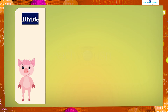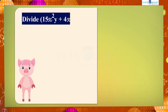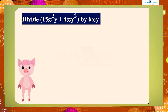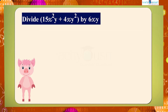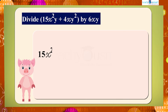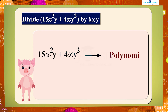Let's see another example. Divide 15x squared y plus 4xy squared by 6xy. Here the polynomial is 15x squared y plus 4xy squared, and the monomial is 6xy.